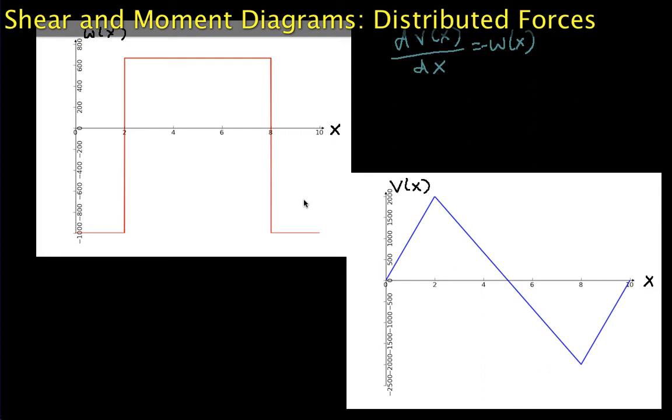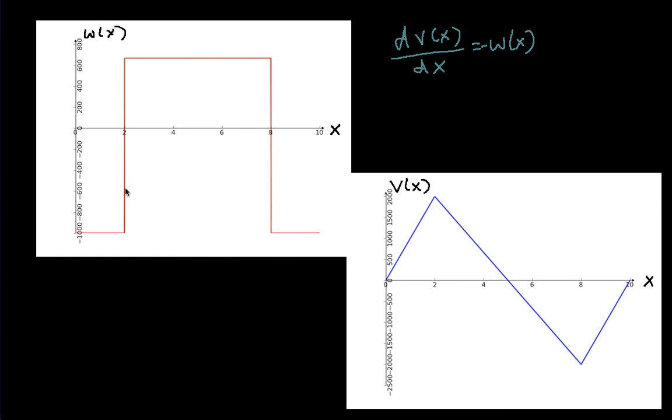In part 1, we found the weight density on the beam, and it turned out to be this red guy. From that, we computed using integrals the shear force function, which turned out to be this triangular shaped thing.